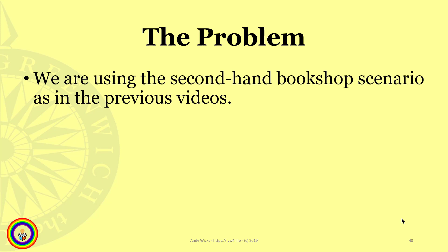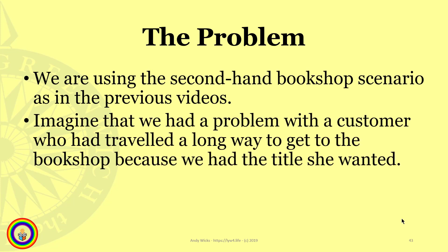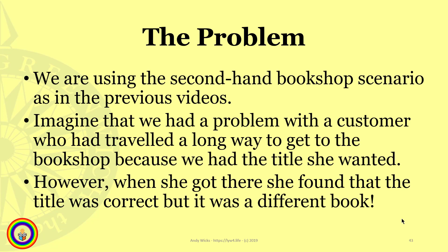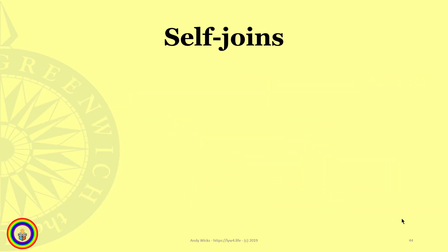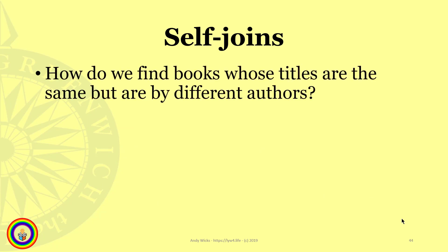The problem we're going to look at uses the secondhand bookshop scenario, as in all the previous videos. Imagine we had a problem with a customer who traveled a long way to get to the bookshop because we had the title she wanted. However, when she got there, she found that the title was correct but it was a different book. So we'd like to overcome that — and for that we need self joins. How do we find books whose titles are the same but are by different authors?